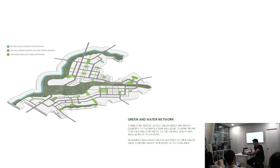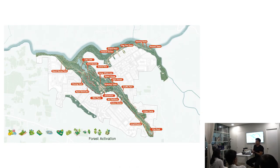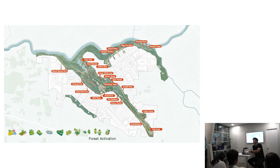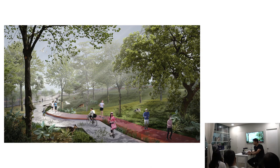We mapped out a green and water network. For the master plan, we placed Bookstop-style portals around the perimeter of the forest to create a transition — a portal — from city development to forest. Examples of these portals include agro-forest gardens, an arboretum, and art installations, and they are not placed randomly but are attached to the nearby community.